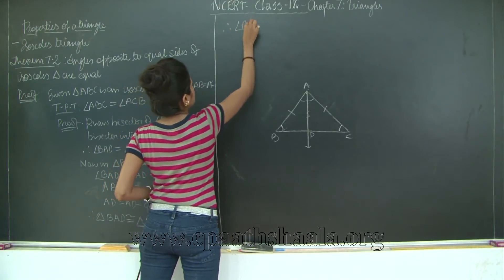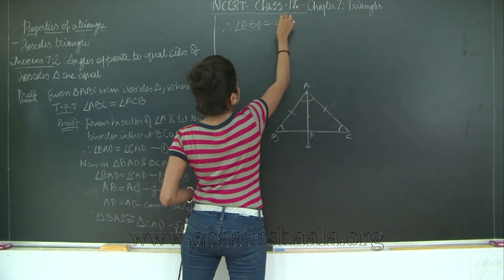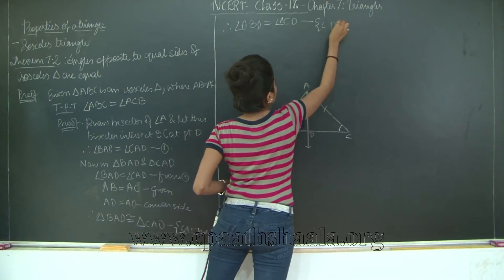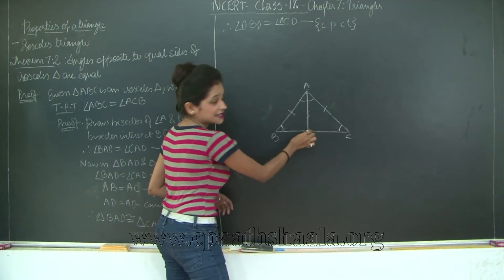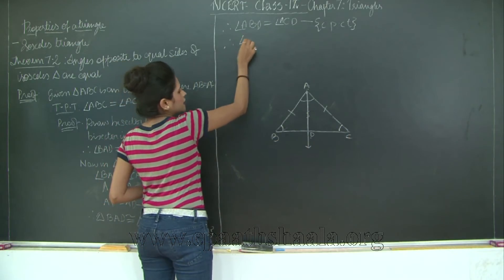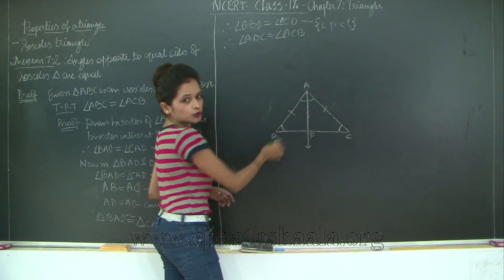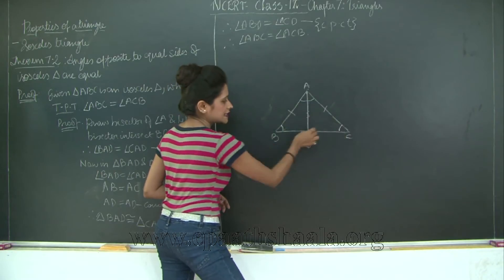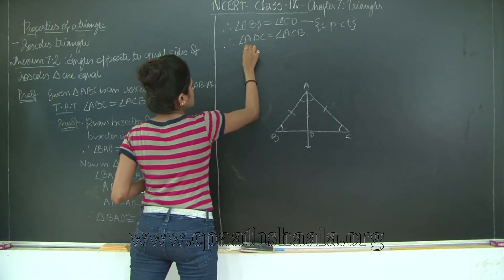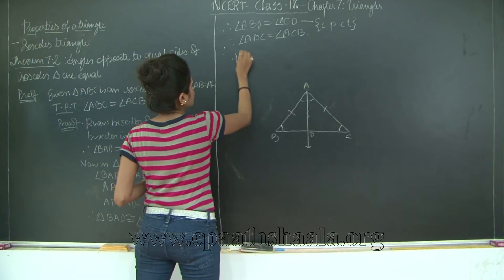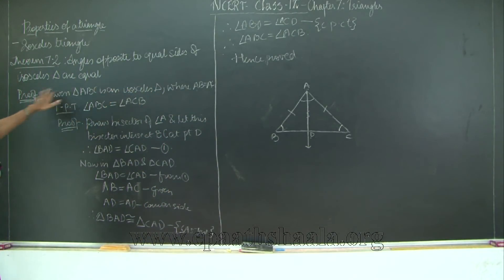Therefore angle ABD is equal to angle ACD by corresponding parts of congruent triangles. Since D lies on line segment BC, we can rewrite ABD as ABC and ACD as ACB. Therefore angle ABC is equal to angle ACB. This is what we had to prove. Hence proved. Therefore angles opposite to equal sides of an isosceles triangle are equal.